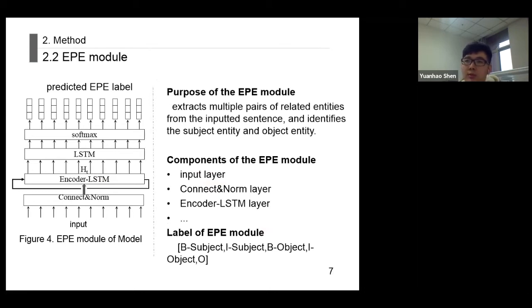The EPE module consists of an encoder LSTM network for modeling the order between related entity pairs and extracting multiple sets of sentence encoding, an LSTM decoding layer, and a softmax layer for identifying the subject entity and the object entity in each encoding. The labels of EPE modules are in BIO format. There are two types of entities: subject and object.